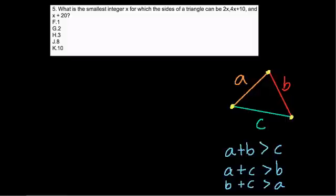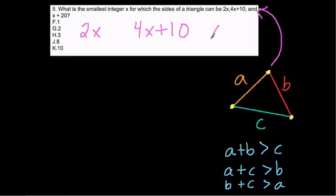But what does this mean about this equation? Well, it means that we have to look at this triangle. And the sides aren't A, B, and C, right? The sides are 2x, 4x plus 10, and x plus 20. And we have to look at every combination and find out what's the smallest integer so that the sum of any two sides is greater than the third. So let's set this up.